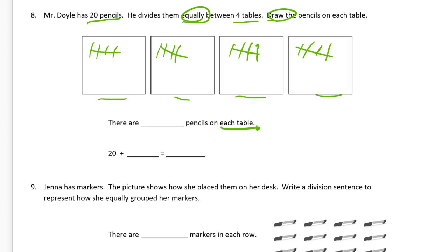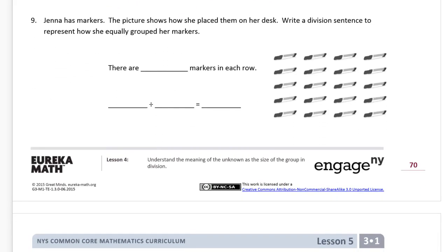How many pencils are on each table? These boxes, each one of them is a square table. There are five pencils on each table. So 20 pencils divided into 1, 2, 3, 4 groups is 5 pencils in each group.